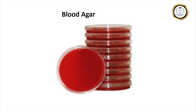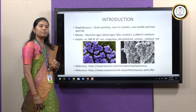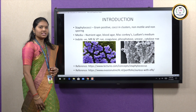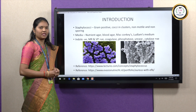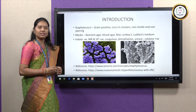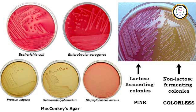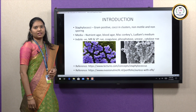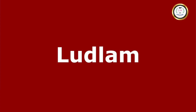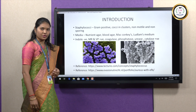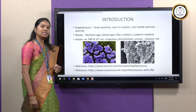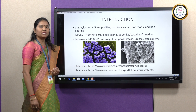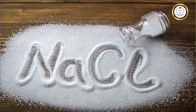Beyond nutrient agar, blood agar and MacConkey agar can also be used. On blood agar, beta hemolysis — that is complete hemolysis of the RBCs — is seen. Pink-colored colonies are formed on MacConkey agar, indicating that lactose fermentation has occurred. Selective media like Ludlam's medium, salt milk agar, salt broth, as well as Robertson's cooked meat medium can be used along with 8 to 10 percent NaCl.